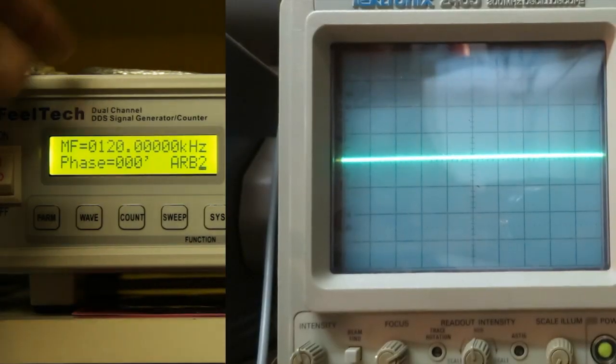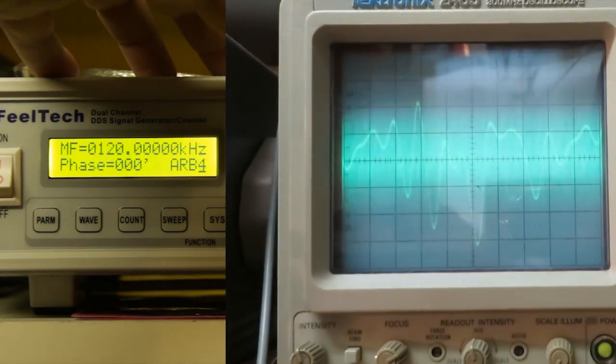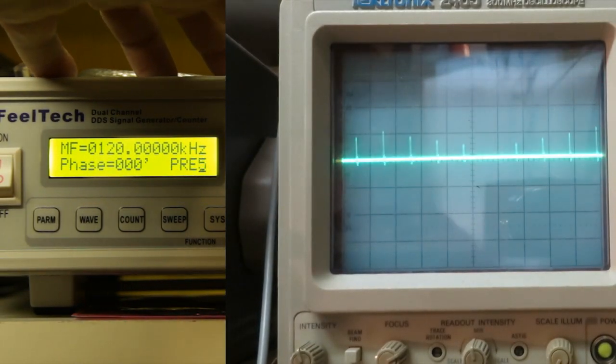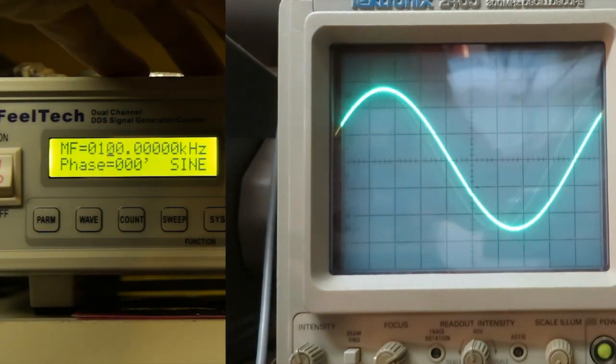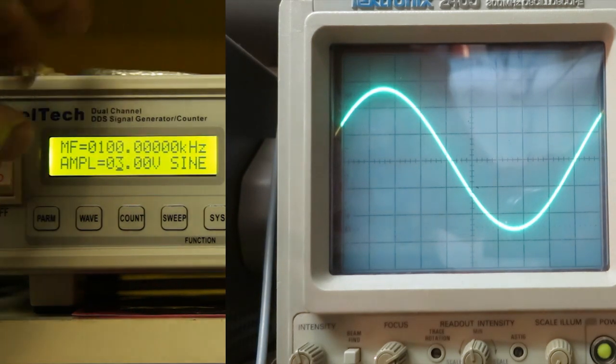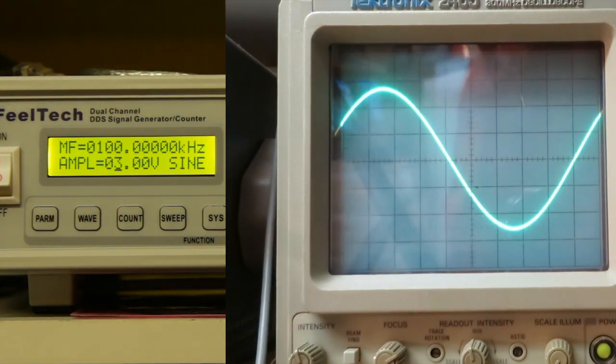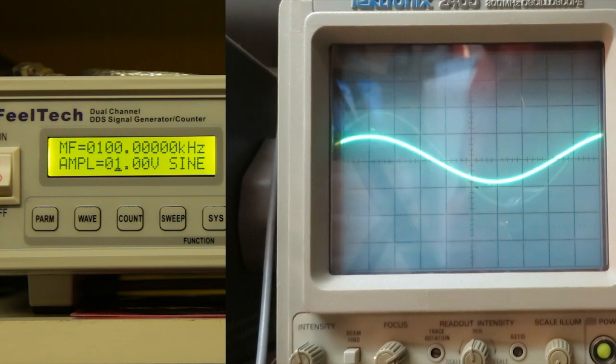There are some additional programmed waveforms already in the generator. I set the frequency to 100 kHz and we can change the amplitude to a maximum of 20 V.